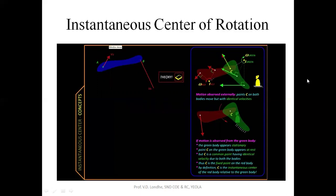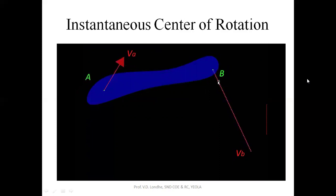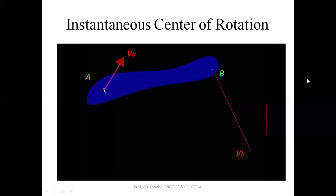Now let us see how to find this instantaneous center. We have a rigid body with two known points: the velocity of point A is completely known, and we know the direction in which B is moving. Since the body is rotating at this moment, every point must be moving along a circular arc. The velocity is always tangential to the path, so we drop a perpendicular to get the radius pointing to the center. This gives us our first pointer to the center — it must lie somewhere on this perpendicular line.